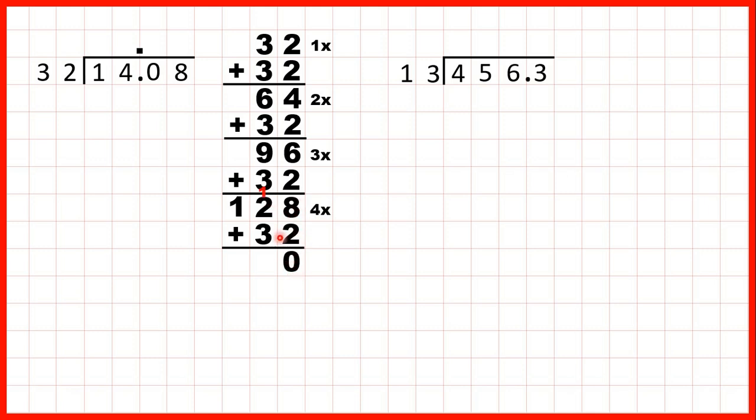And I've written the 1 in red only so that it's easier to see. Then 1 plus 2 plus 3 is 6. 1 plus nothing is 1. So 160 must be 5 times 32.